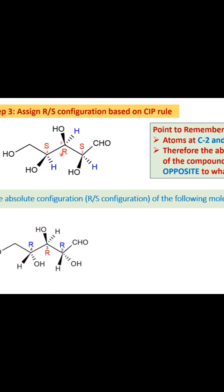In the case of the third carbon, there was no change or transposing of the groups. So whatever configuration was obtained, it is retained. Whereas in the case of carbons 2 and 4, the configuration that was obtained is changed — it is the opposite.